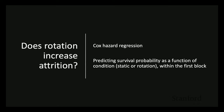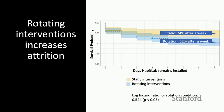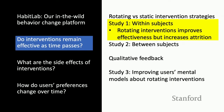We also investigated whether rotation increases attrition using a Cox hazard regression, predicting survival probability as a function of condition within the first block. Looking at the first seven days, static interventions had 74% of users remaining after a week, but with rotation only 52% remained. So rotating interventions improves effectiveness but increases attrition.